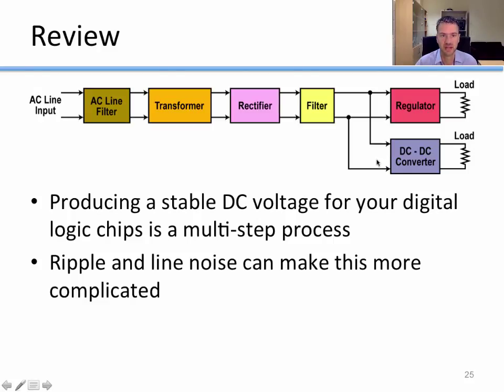Okay, let's review. Our goal in creating a power supply is to produce a stable DC voltage for digital logic chips. This is a multi-step process. You go through all of these steps to go from an AC wall output to some sort of regulated, properly stable DC output. Ripple and line noise can make this more complicated, but overall we have really good solutions for this.